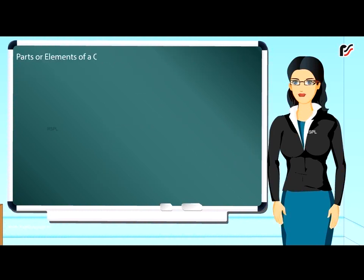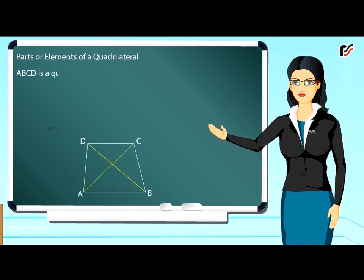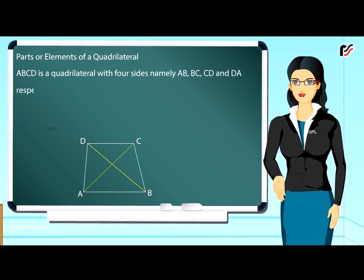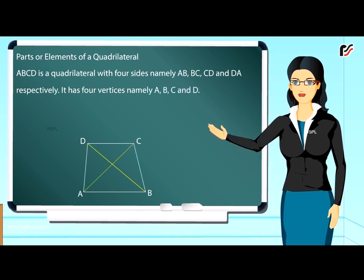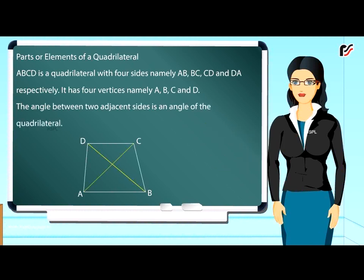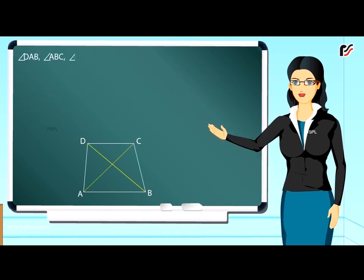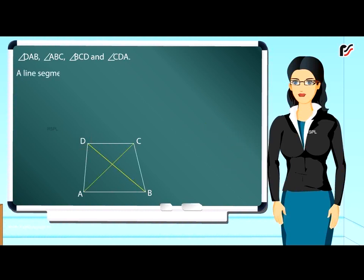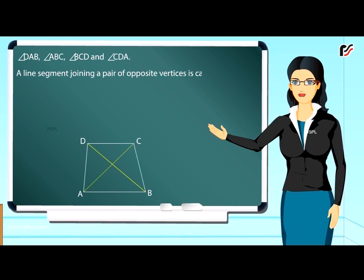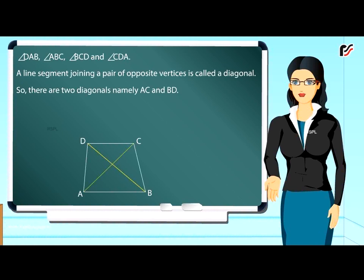Parts or elements of a quadrilateral: ABCD is a quadrilateral with four sides namely AB, BC, CD and DA. It has four vertices namely A, B, C and D. The angle between two adjacent sides is an angle of the quadrilateral, so a quadrilateral has four angles: angle DAB, angle ABC, angle BCD and angle CDA. A line segment joining a pair of opposite vertices is called a diagonal, so there are two diagonals namely AC and BD.